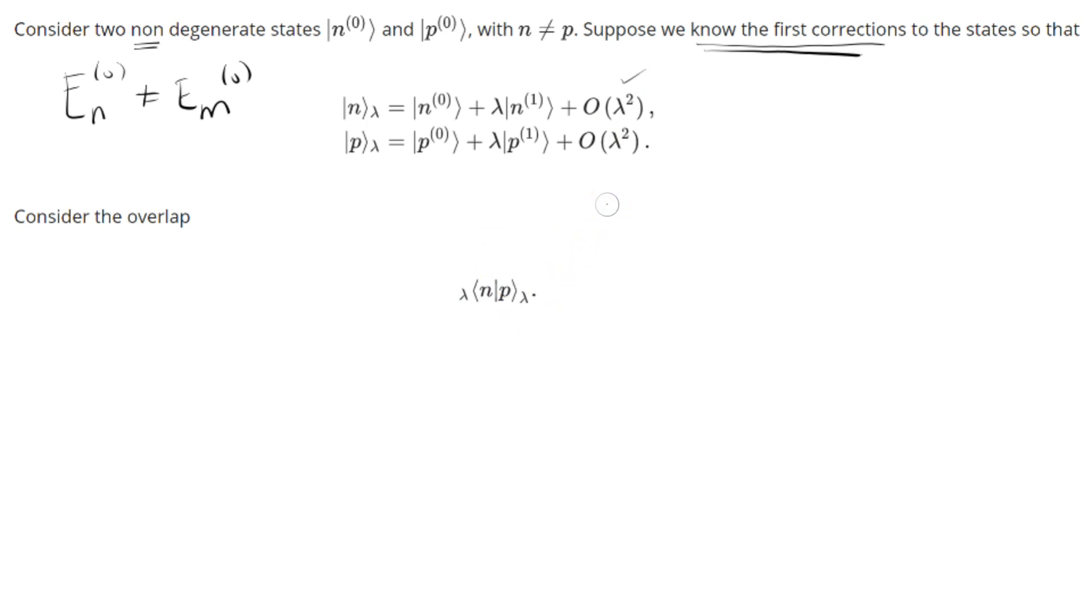Alright, so N lambda, if we expand it, is just going to give us, let's see, N0 plus N1 lambda plus order lambda squared. And this is all multiplied by P lambda. P lambda is nothing more than P0 plus lambda P1 plus order lambda squared. So let's expand that up and see what we get.